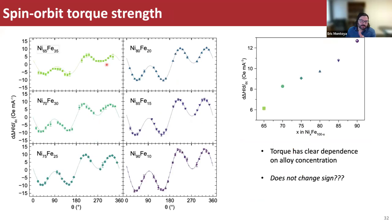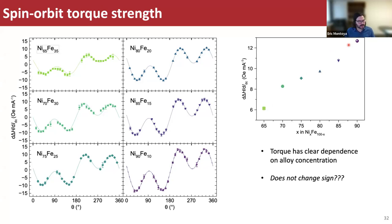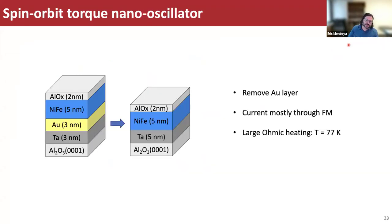We perform the similar measurement for all our nickel-iron alloys and see that with increasing nickel concentration, the strength of the torque increases — a clear dependence on alloy concentration. However, unexpectedly, it doesn't change sign, whereas the anomalous hall charge effect does change sign. This was initially a mystery, which I'll explain in the subsequent slides.